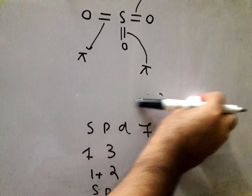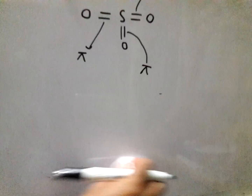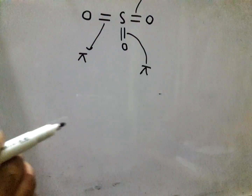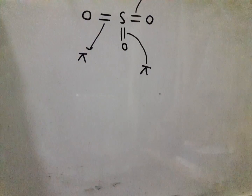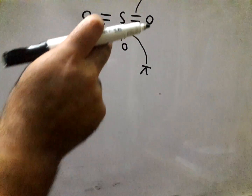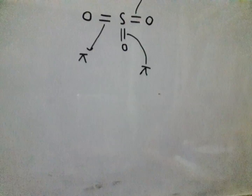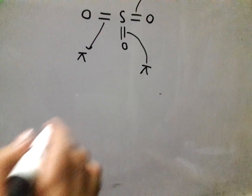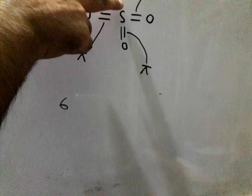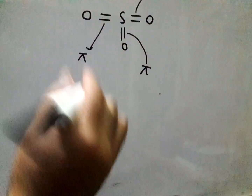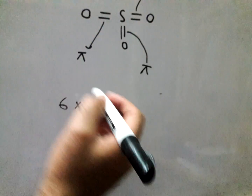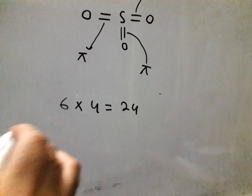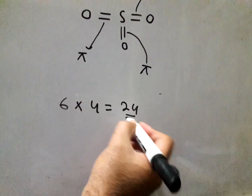The second way: you need to calculate all the electrons from the outermost shell. Sulfur and oxygen are in the same group, so they each have six electrons. That means six electrons for each of the four atoms, so six multiplied by four equals twenty-four.